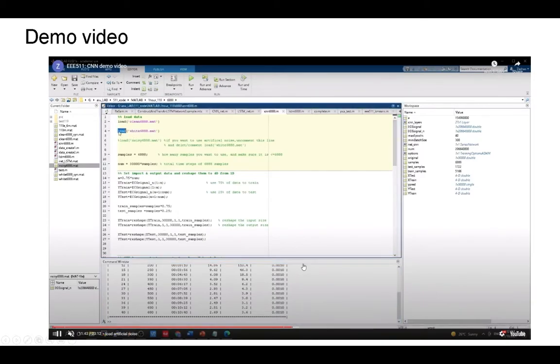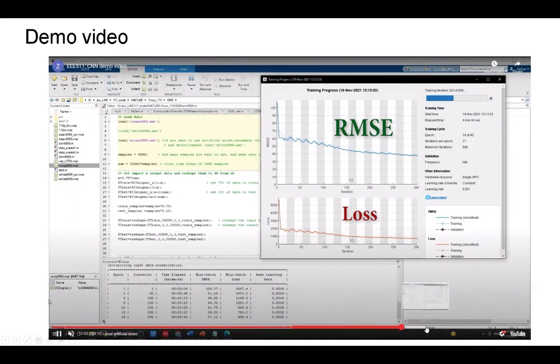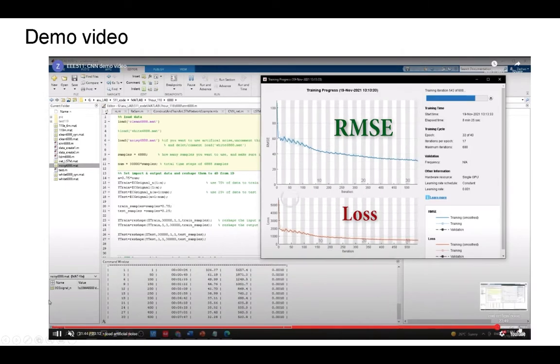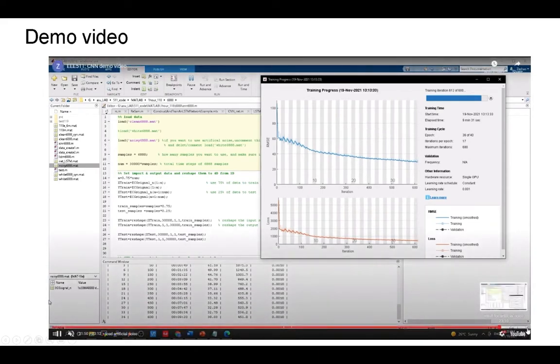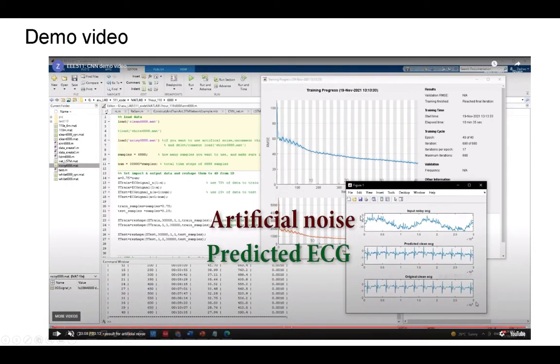For another case, we use artificial noise as our input. We use seven steps in training. As you can see, the RMSE plot is rougher compared to last one. This is because the artificial noise is real data and it is more inconsistent than white Gaussian noise. And this is our test result and the artificial noise has been removed.